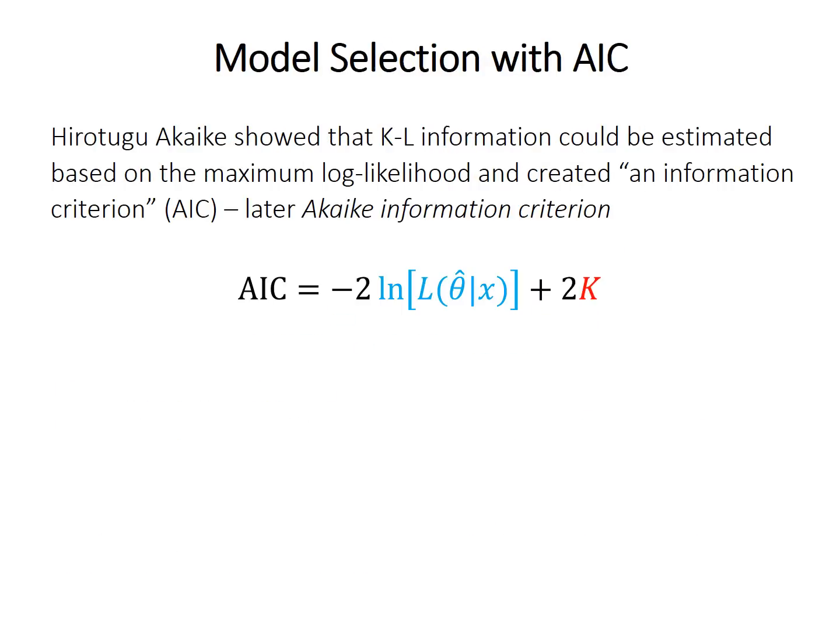Okay, but the Kulback-Leibler information turns out to be extremely difficult to calculate, even in a relative sense, for many different functions. But Japanese statistician Hirotsugo Akaike showed that you could actually estimate this KL information from the maximum log likelihood. And so he created a value which he called an information criterion, or AIC, and which is now called the Akaike information criterion.